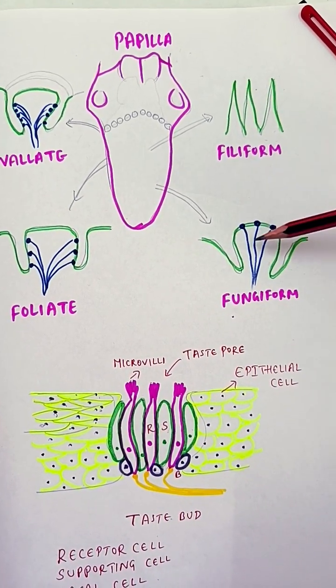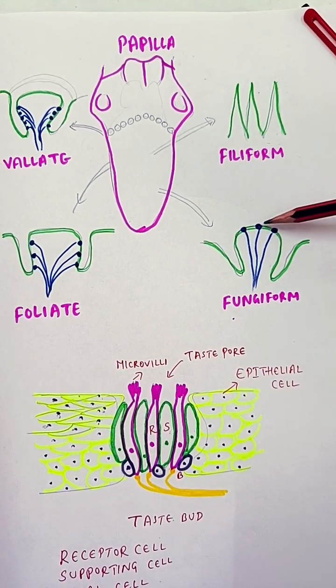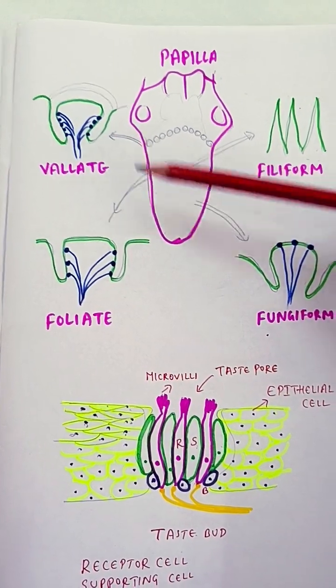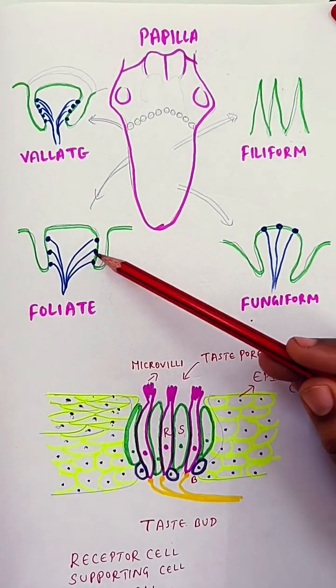This papilla doesn't have taste buds, but if you see this fungiform papillae has taste buds on the surface. Vallate and foliate papillae have taste buds on these sides. Now this is one taste bud which has been expanded here.